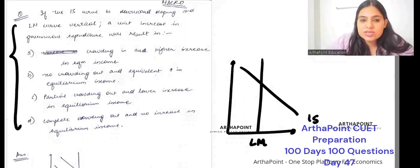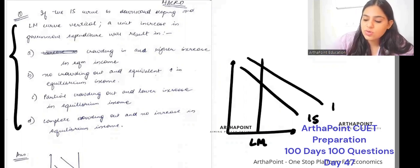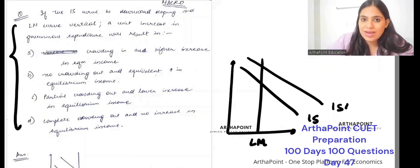a unit increase in government expenditure - so IS is shifting to the right - will result in, so LM is vertical, which means output will not change.